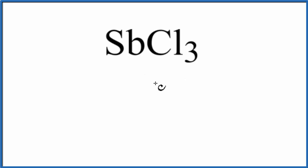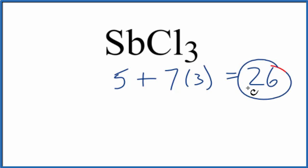So Sb, antimony, has 5 valence electrons. It's in group 15, sometimes called 5a. Chlorine has 7 valence electrons. We have these 3 chlorine atoms, so we multiply by 3, 5 plus 21, 26 total valence electrons for the SbCl3 Lewis structure.